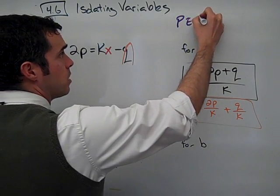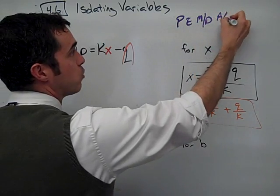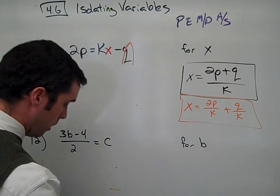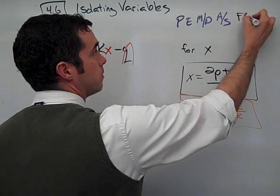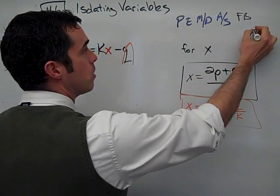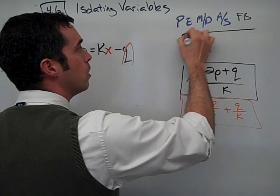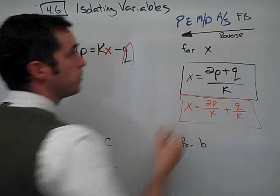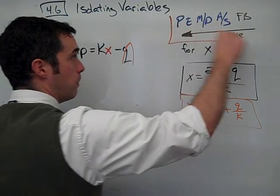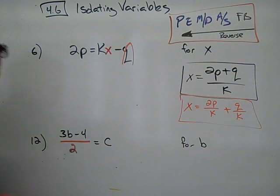Again, if you remember our order of operations: parentheses, exponents, multiply and divide from left to right, add and subtract from left to right. And then we included a new one, fraction bars. So as we solve an equation by performing order of operations in the reverse order, we're going to have to deal with the fraction bar first.